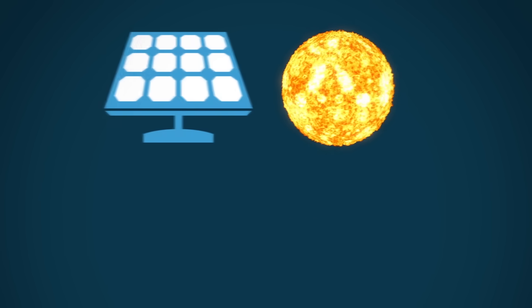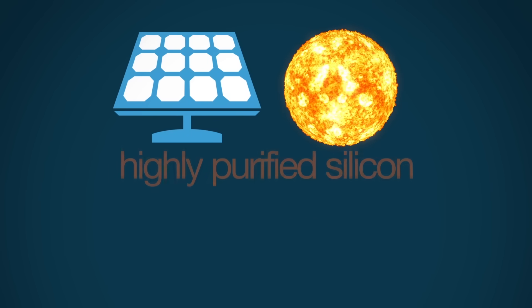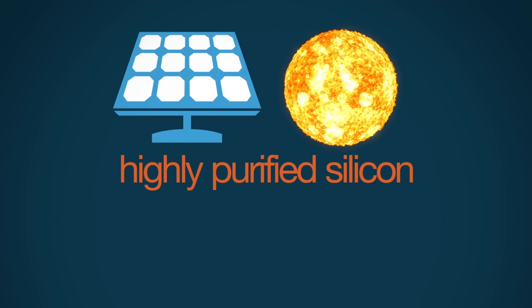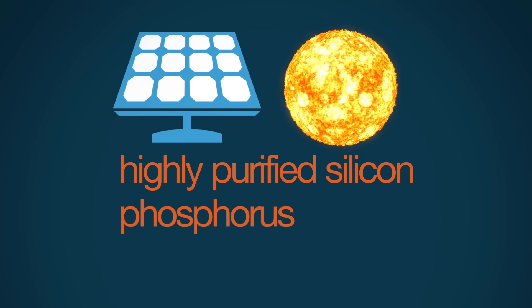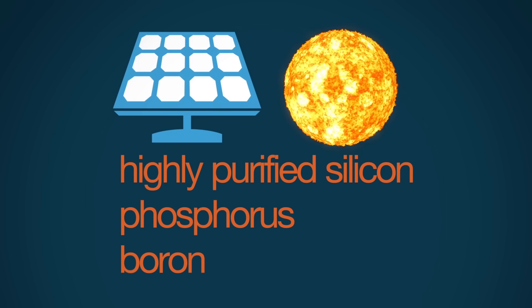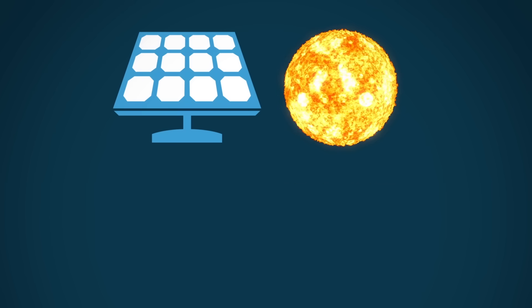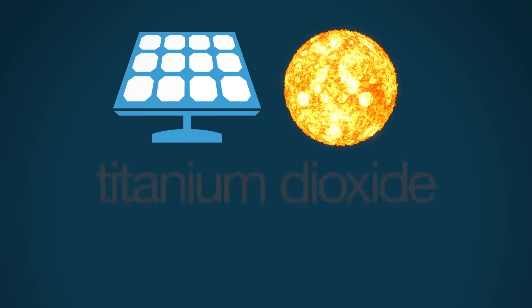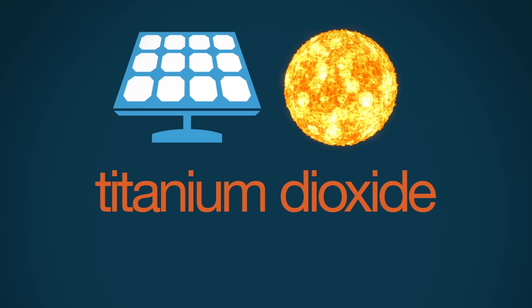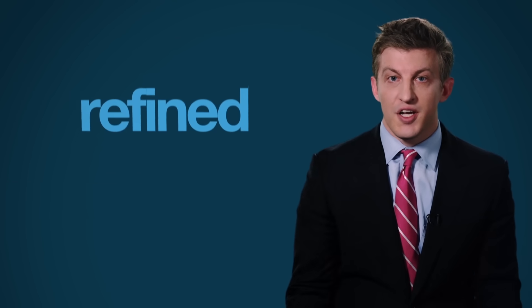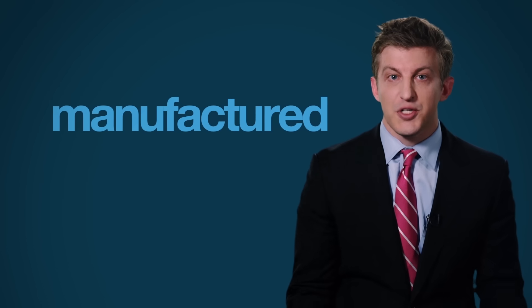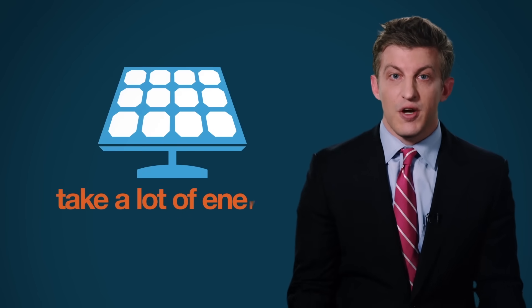Which means you need a lot of additional materials to produce a unit of energy. For solar power, such materials can include highly purified silicon, phosphorus, boron, and a dozen other complex compounds like titanium dioxide. All these materials have to be mined, refined, and manufactured in order to make solar panels. Those industrial processes take a lot of energy.